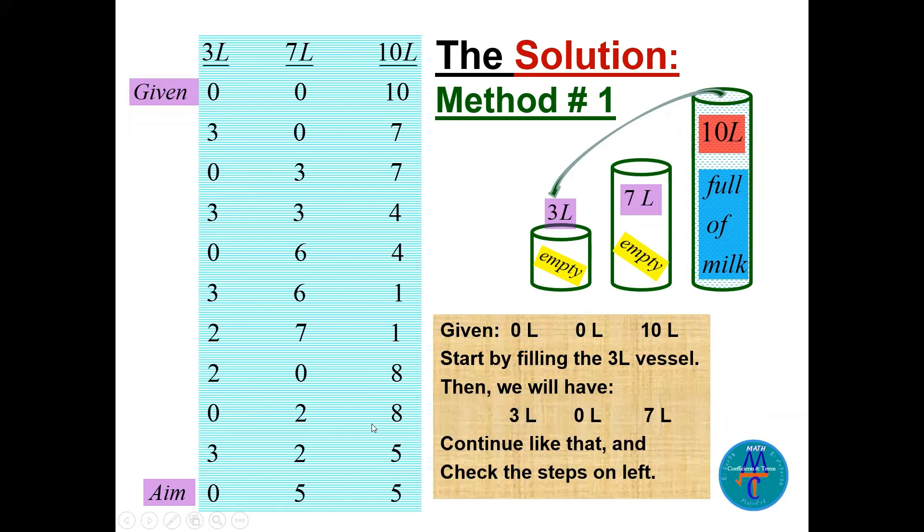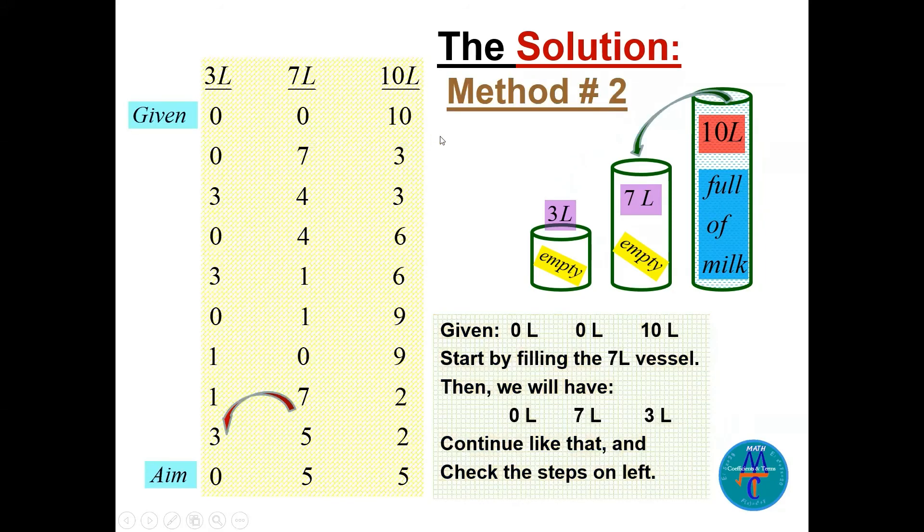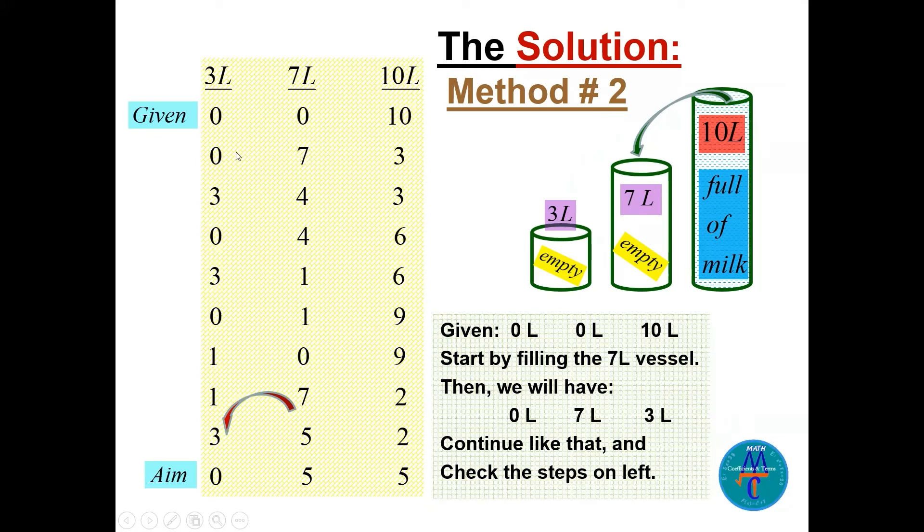So this is method number one. Method number two: I will start to pour in the 7. So from the 10 I will make this one full and this is 0. So I start 0, 0, 10. Second step will be 0, 7, 3. Then I take this 3 and pour here from the 7. Here I put 3, 3, 4, 3.